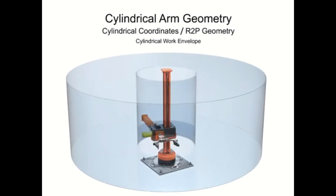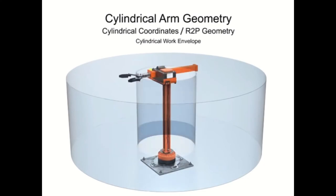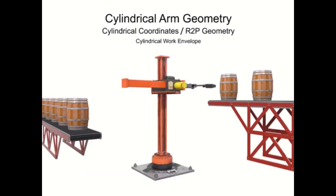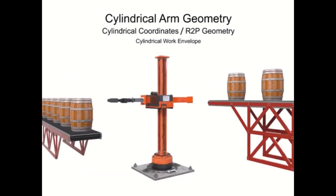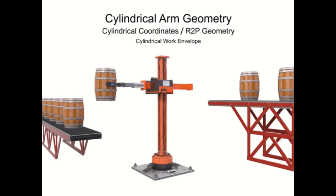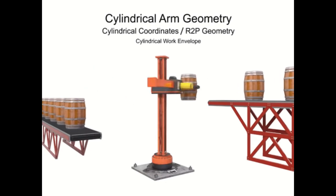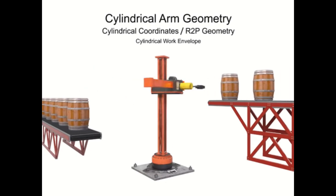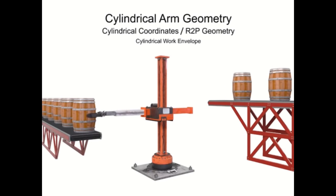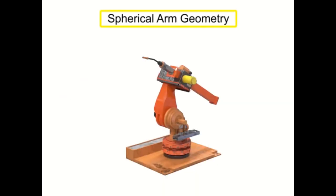The vertical linear motion is referred to as the stroke or height. The horizontal extension is called the reach, and the rotational movement is referred to as the swing, sometimes called the twist. The cylindrical robot draws a cylindrical work envelope, which is very large but limited by the maximum and minimum reach of the arm. It is also very strong and stable in its center of gravity because it's relatively rigid.